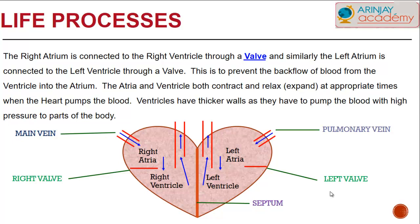Looking at the diagram of a heart, the right atrium is connected to the right ventricle through a valve, and similarly the left atrium is connected to the left ventricle. This prevents the backflow of blood from the ventricle into the atrium — if too much pressure builds up the valve opens, otherwise it remains closed. The atria and ventricles both contract and relax at appropriate times, and ventricles have thicker walls to pump blood at high pressure.